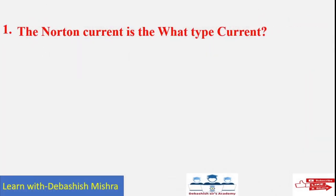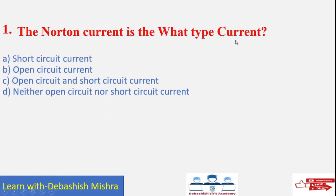Here is the first question. The Norton current is what type of current? The options are: short circuit current, open circuit current, open circuit and short circuit current, or neither open circuit nor short circuit current. The answer is short circuit current.